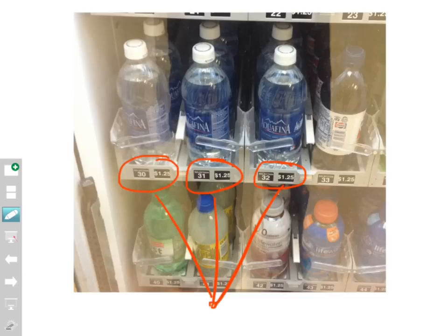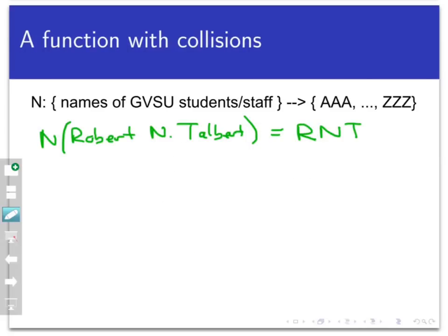The first example is a function n that maps the names of GVSU students and staff into the set of all three letter combinations. And the process by which we map is that a person is mapped to his or her initials. For example, n of my name would be RNT. This is a function because there is no splitting. One person is not going to have two different sets of initials. But the function could have collisions, and probably does have collisions, because it's possible, even probable, that two different people in this set are going to have the same initials.